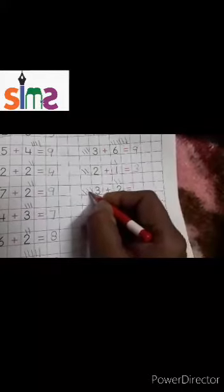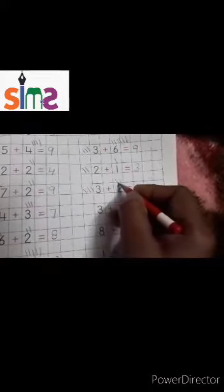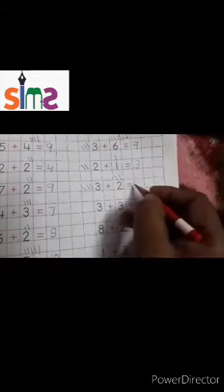Three number — three lines: one, two, three. Two: one, two. Counting all: one, two, three, four, five. So three plus two is equal to five.